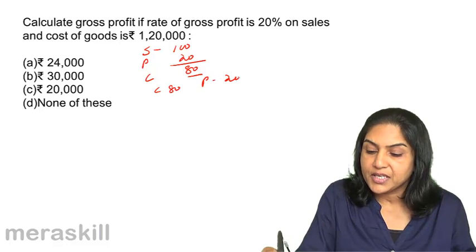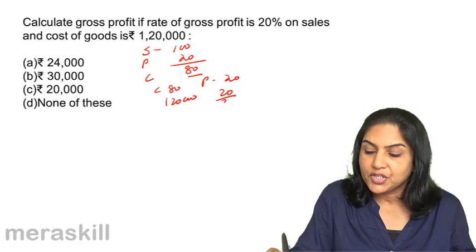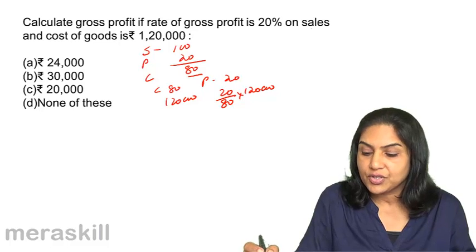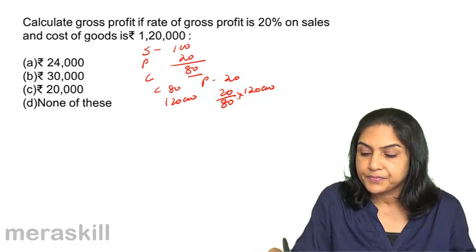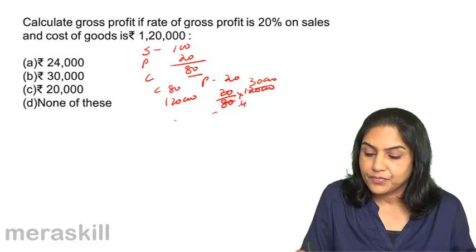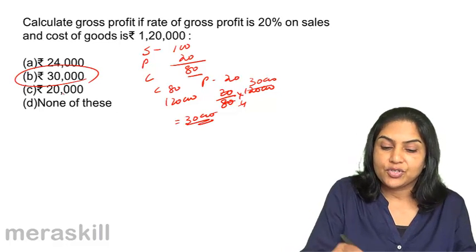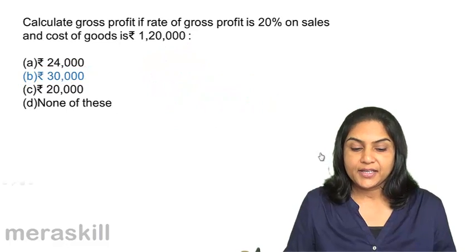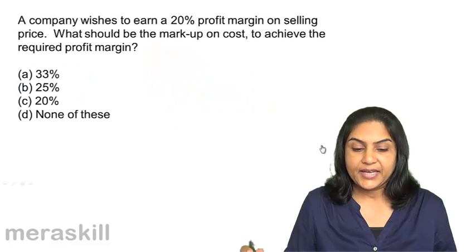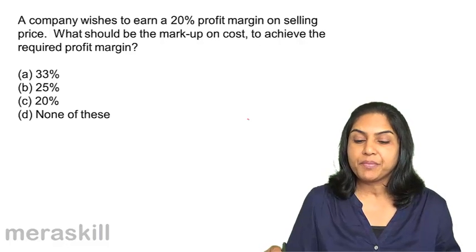When cost is 80, profit is 20. So when cost is 1,20,000, profit is 20 divided by 80 into 1,20,000, giving us 30,000. The correct answer is b) 30,000.